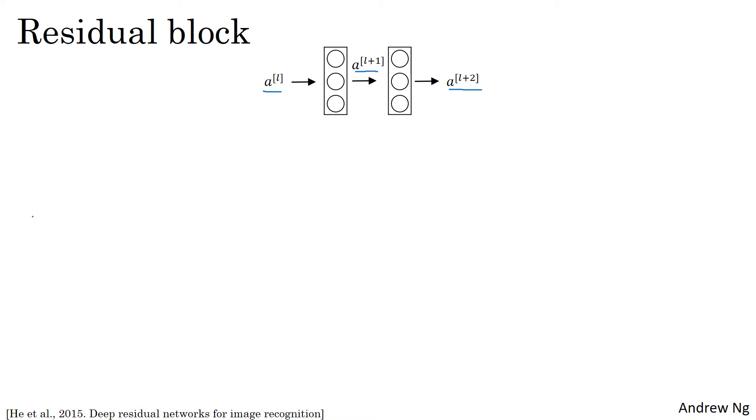So to go through the steps in this computation, you have AL, and then the first thing you do is you apply this linear operator to it, the weight which is governed by this equation to go from AL to compute ZL plus one, by multiplying by the weight matrix and adding that bias vector.